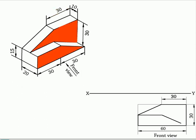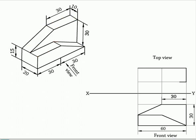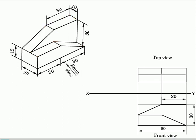Draw the projectors vertically upwards and complete the top view. To draw the left side view, as per the third angle projection method, the left side view will come to the left of the front view.